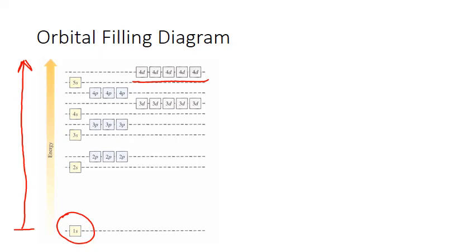The sublevels and principal energy levels in an actual atom go out much further than this. They include F sublevels, which we didn't go out far enough to see. They go out to the 6th, 7th, and 8th energy levels. This diagram is limited solely because of what fit onto the screen, but you should know they do go out further.